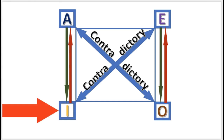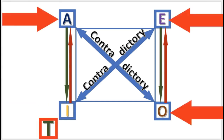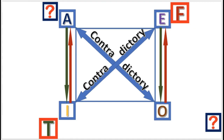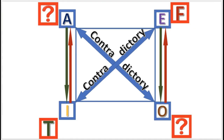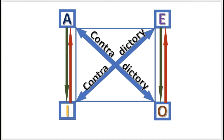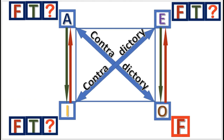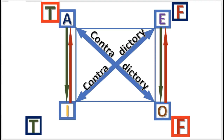Next practice problem: If I is true, what are the other truth values? The answer: E is false, and A and O are undetermined. Next practice problem: If O is false, what are the other truth values? The answer: A is true, E is false, and I is true.